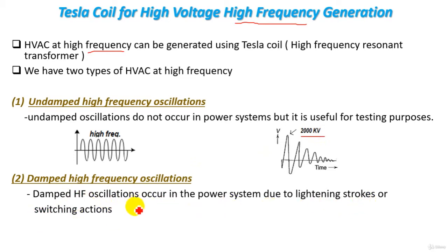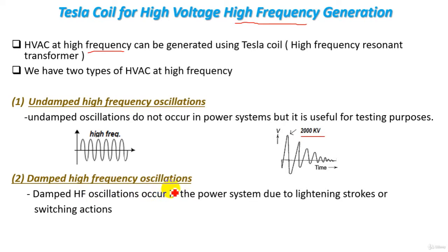In a power system, if any insulator or high voltage equipment is subjected to lightning strokes or switching actions, it may experience damped high frequency oscillations. We need to generate this type of oscillation in a high voltage lab to test insulators or high voltage equipment before they can be used in the power system.